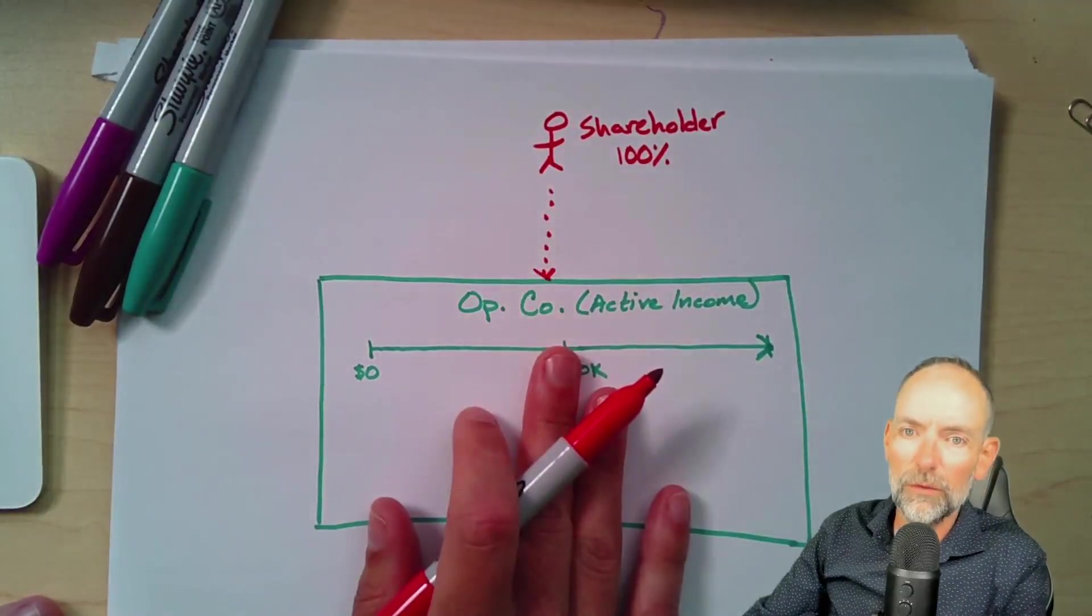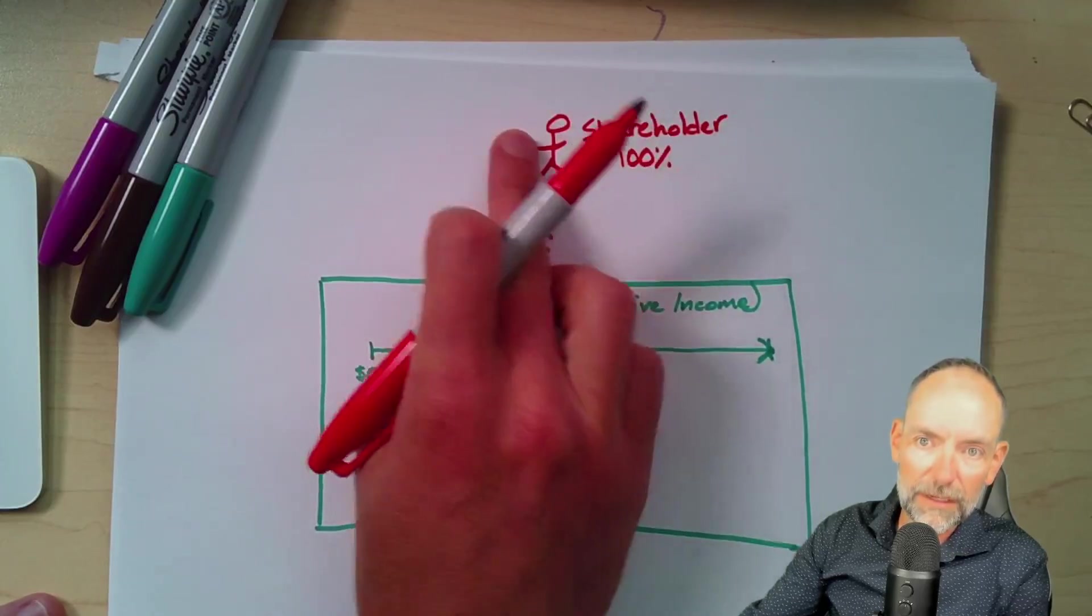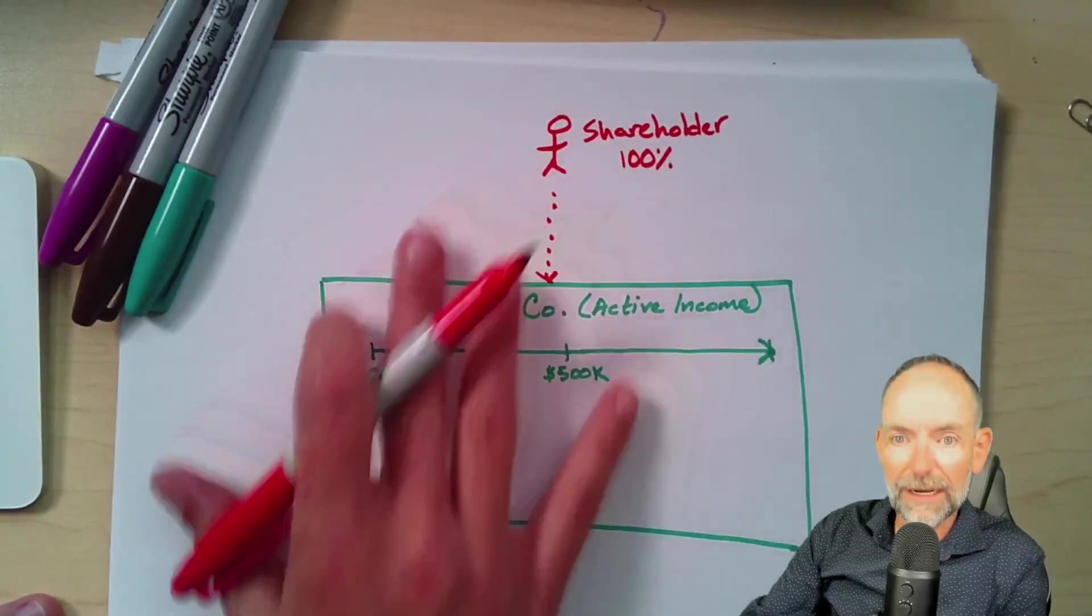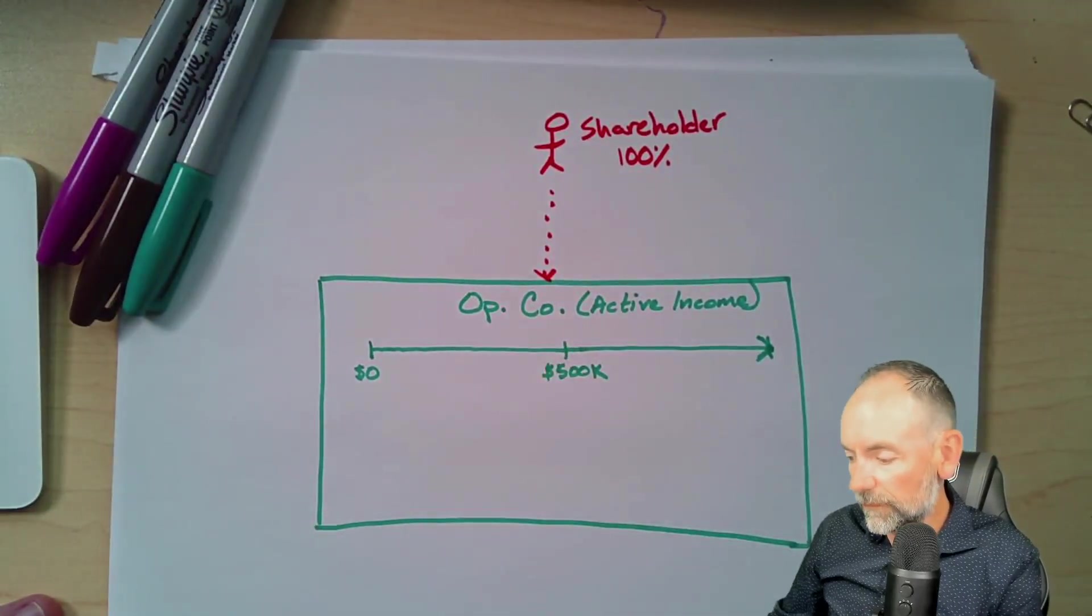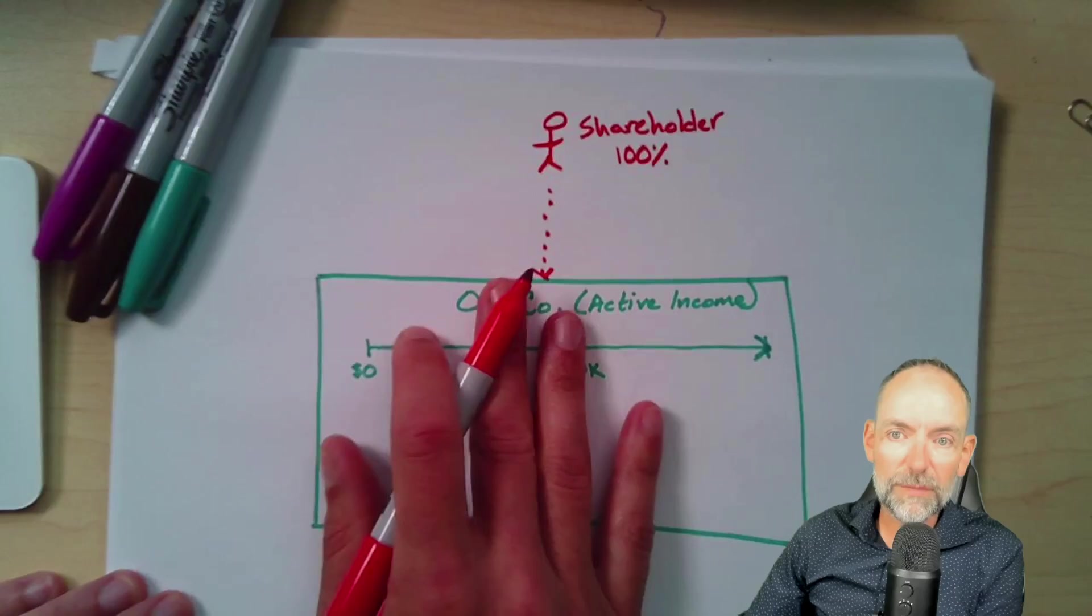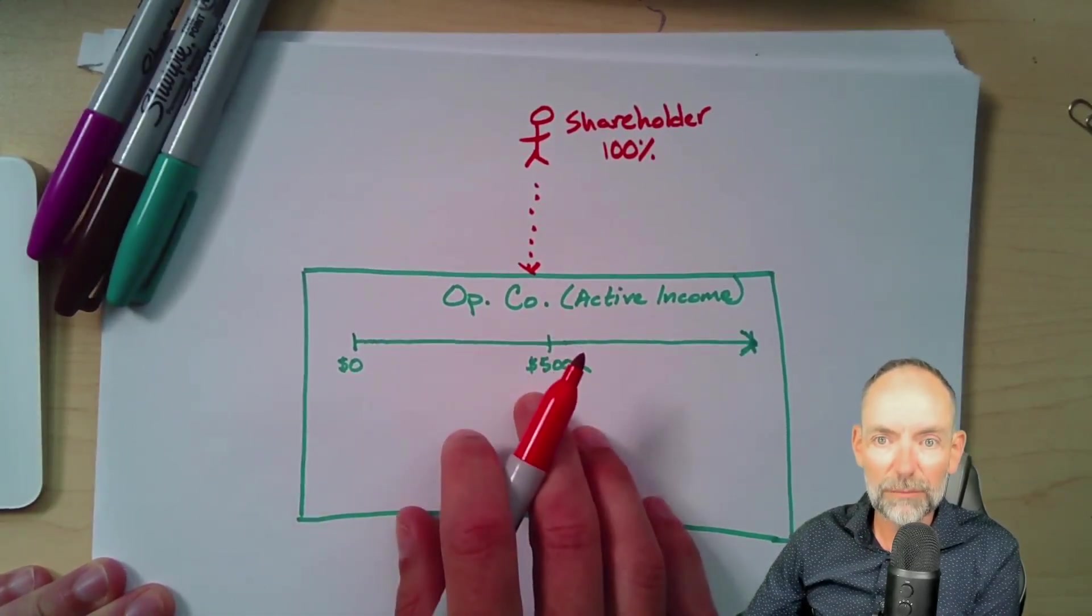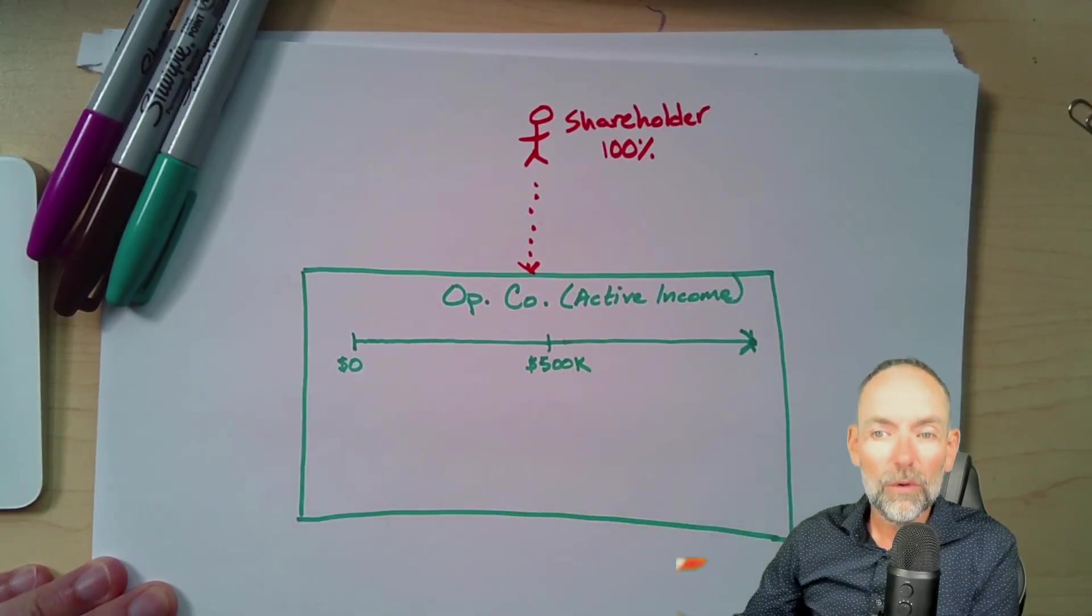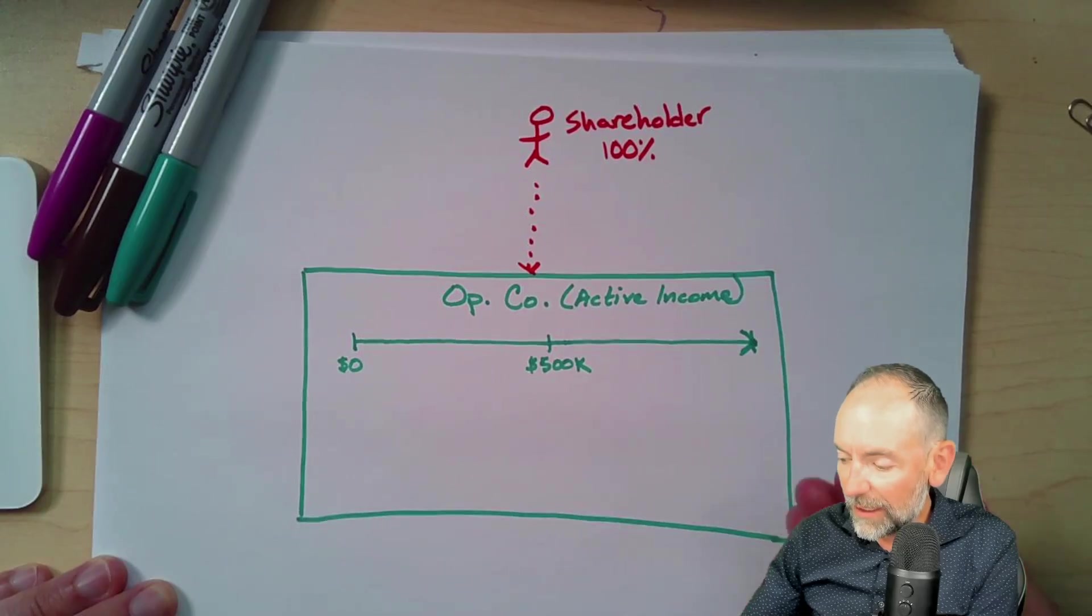And you personally own this operating company. Another option could be that this is a holding company above here, and then you own shares of the holding company. We're not gonna get into that today. Everything we're talking about here today would apply in that situation first. But first and foremost, let's make sure that we understand what's going on. When I earn active income inside my operating company, so this means we're not earning investment income primarily. We're actually doing active work. So we're earning active income.